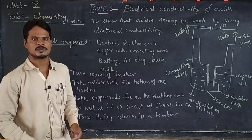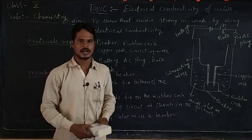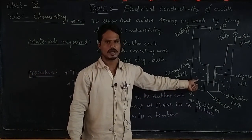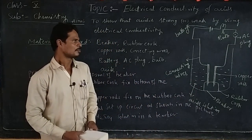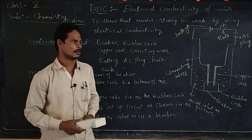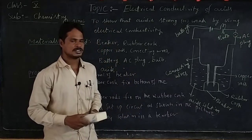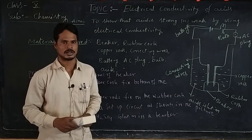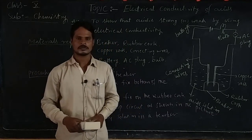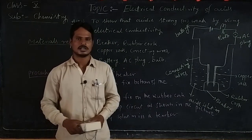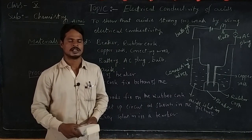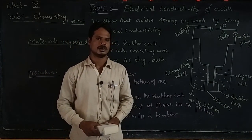Now repeat the activity, but instead of sulfuric acid, take acetic acid. When we add the acetic acid and switch on the circuit, the intensity of the bulb is very low. The reason is that acetic acid produces fewer H⁺ ions, that is why the bulb does not glow brightly. The conclusion is that H₂SO₄ is a strong acid whereas acetic acid is a weak acid, because H₂SO₄ produces a large number of H⁺ ions whereas acetic acid produces fewer H⁺ ions.